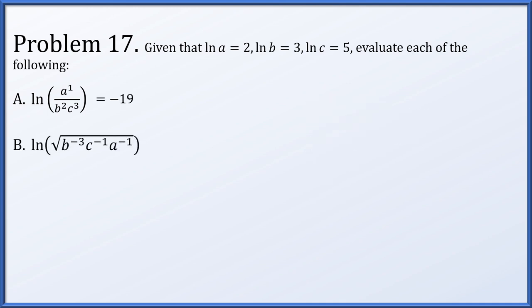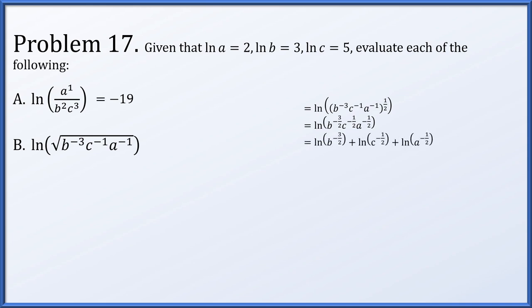For part b, the natural log of the square root of b to the minus 3 times c to the minus 1 times a to the minus 1. Writing the radical as an exponent of one half, we distribute that one half inside to get b to the minus 3 halves, c to the minus one half, and a to the minus one half. Breaking up the product of logarithms as a sum and bringing exponents out as scalar multiples, we substitute known values and compute a result of negative 8.